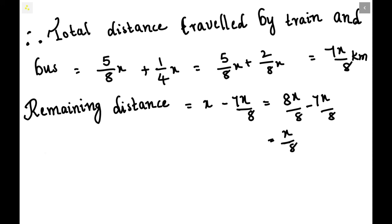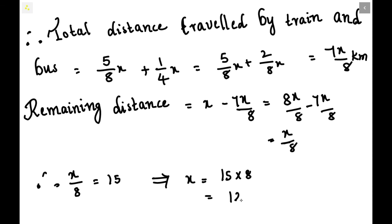We are given that 15 kilometers is traveled by boat, so x/8 can be equated with 15 kilometers. Therefore x equals 15 times 8, which equals 120 kilometers. Here x is the total distance traveled, so the total distance is 120 kilometers.